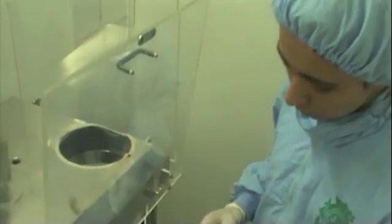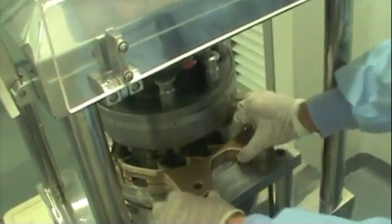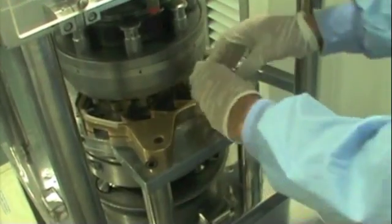And now we have to put the feeder into the tablet machine. That will allow the powder to get into the dies when it is working. And now we fix it with these two screws.